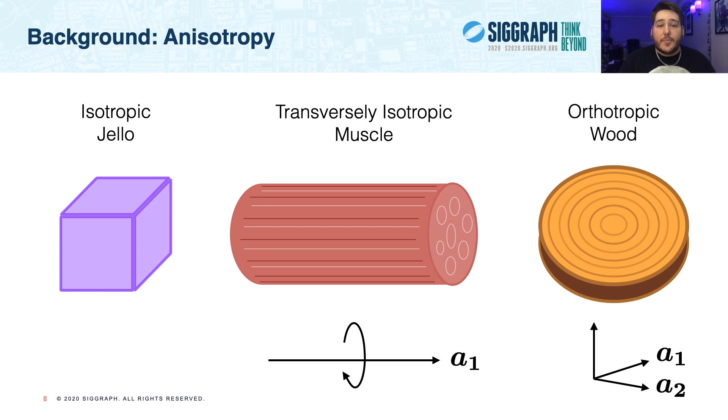Finally, I'll give a brief overview of some anisotropy terminology. Firstly, isotropic materials behave the same in every direction. Think of a simple jello cube bouncing. Its elastic response is the same regardless of direction.